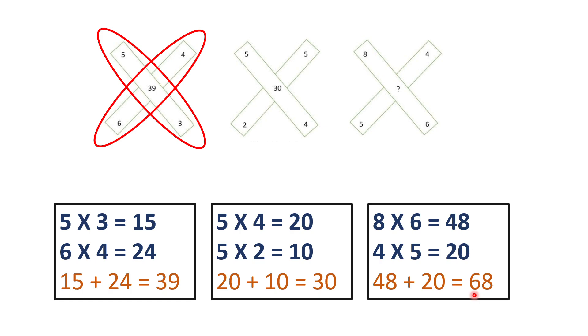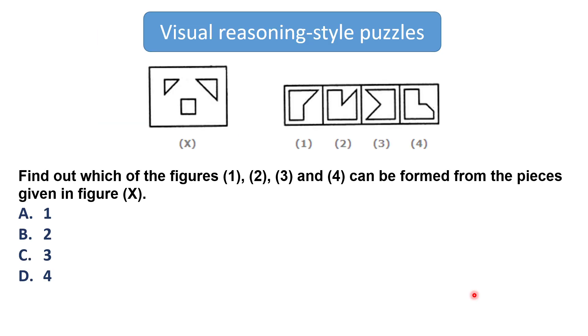Now the next question is from visual reasoning style puzzle. To solve this question you should have strong visualization skill. The question is find out which of the figure 1, 2, 3 and 4 can be formed from the pieces given in the figure X. So basically here we have to join the shapes from the figure X in such a way that it should be equivalent to any one of the figure out of the given 4 figures. So the answer will be A. Here there is not any specific solution or way to solve this question. You only need to observe the figures and find out the answer.